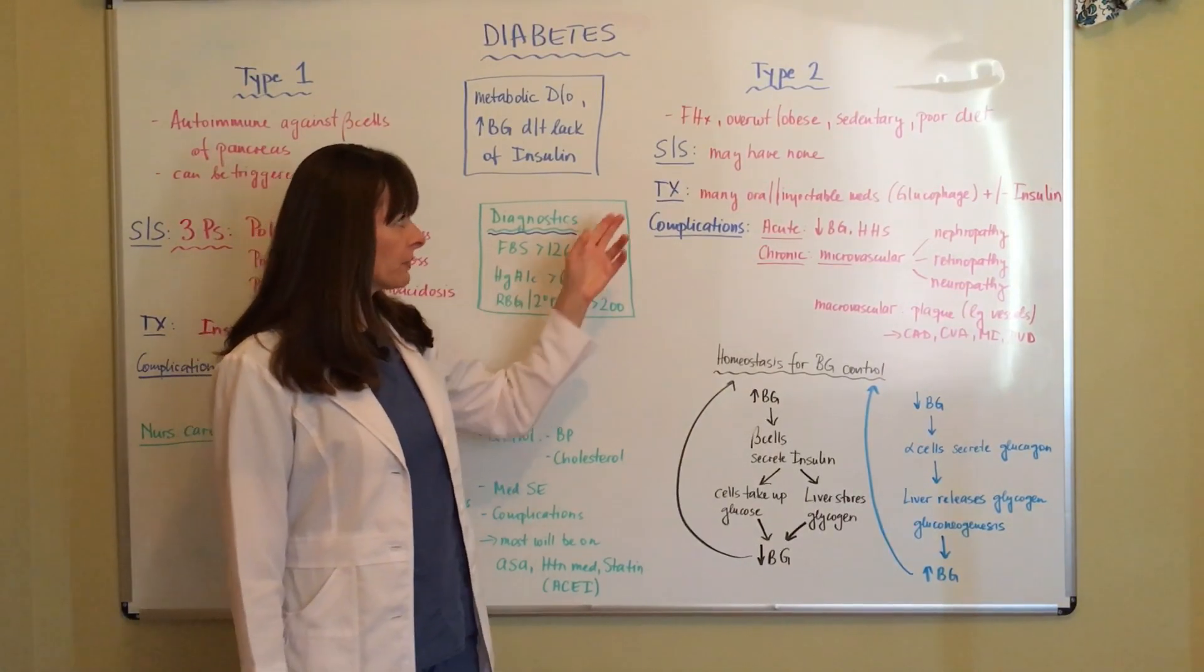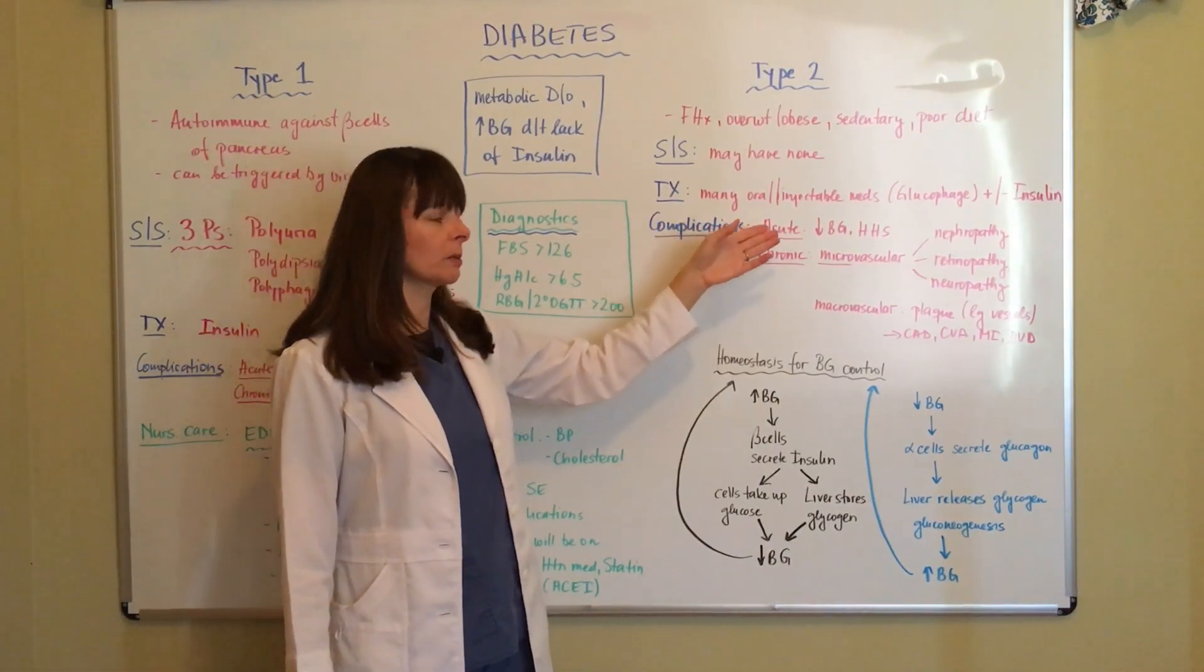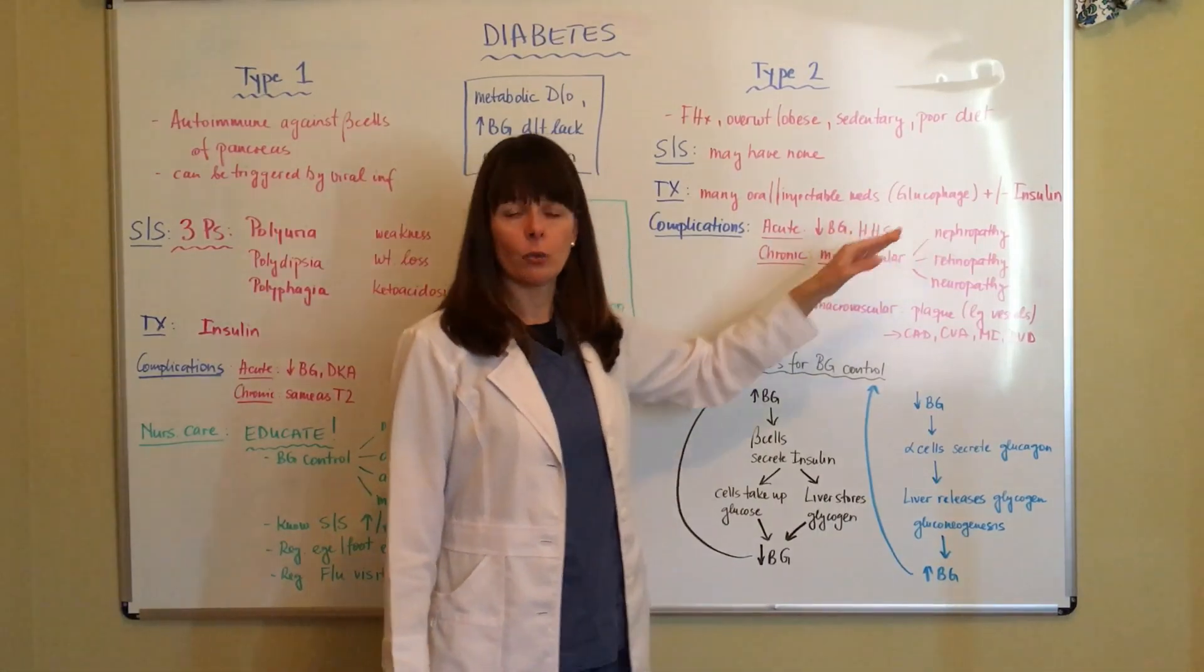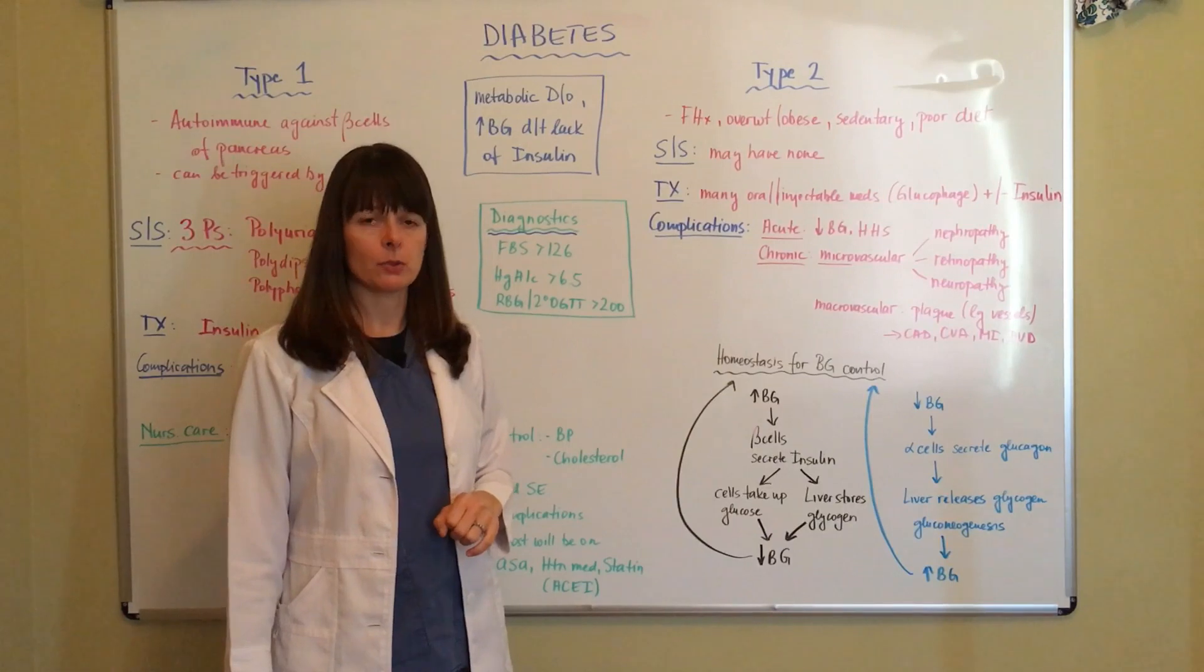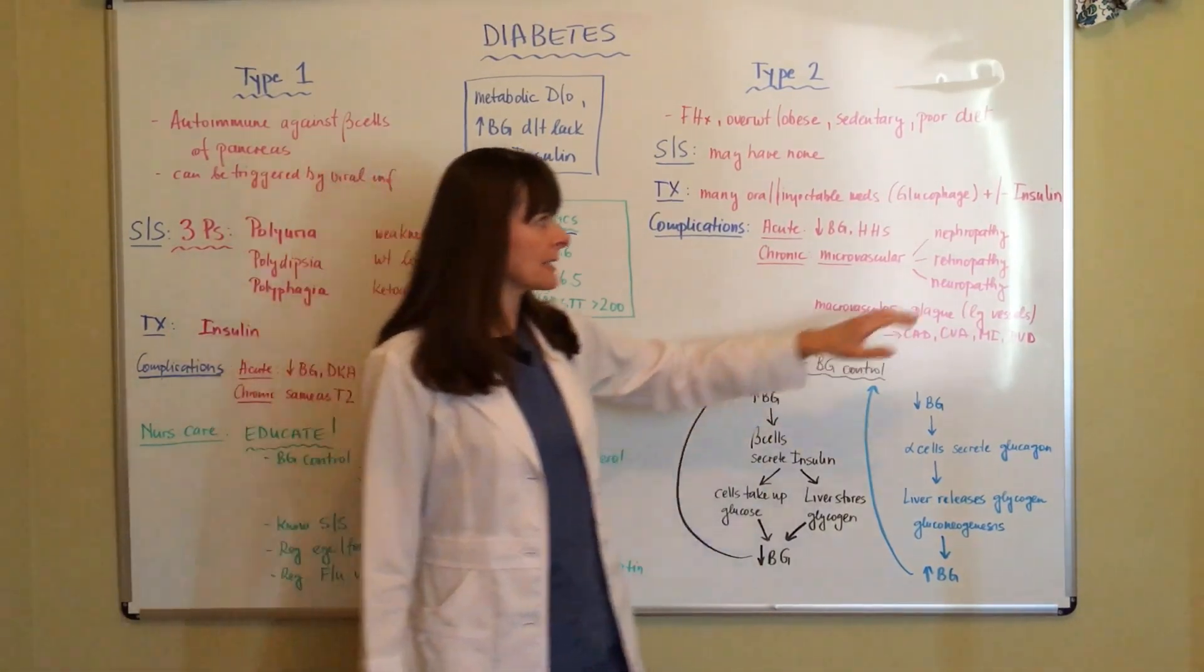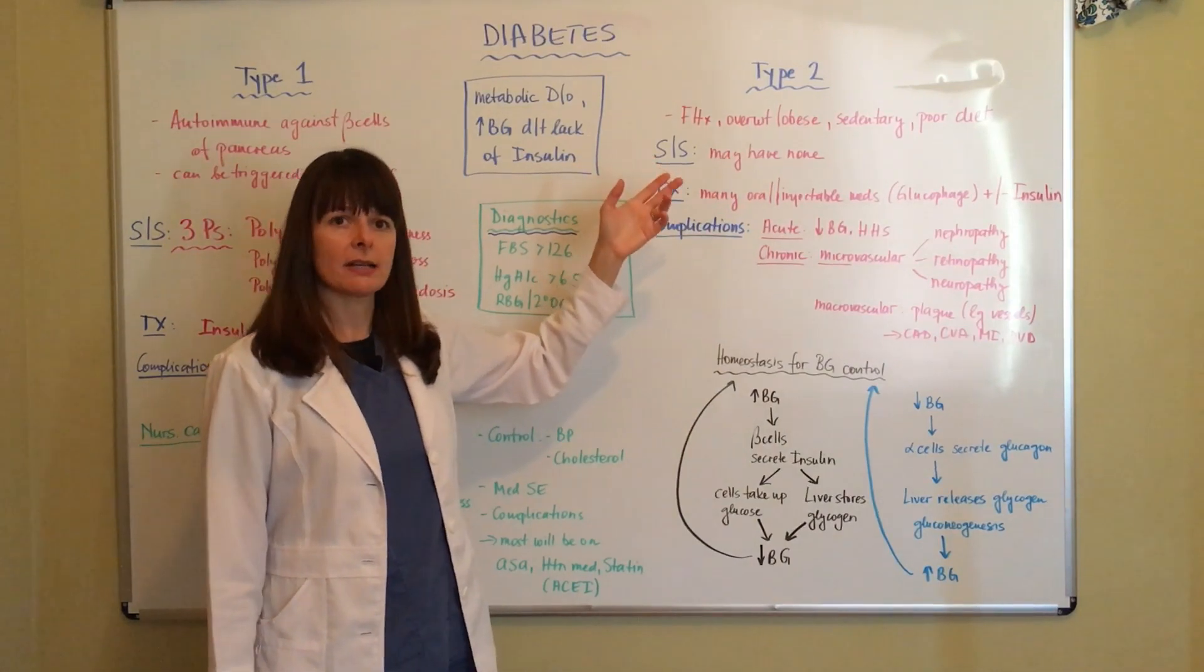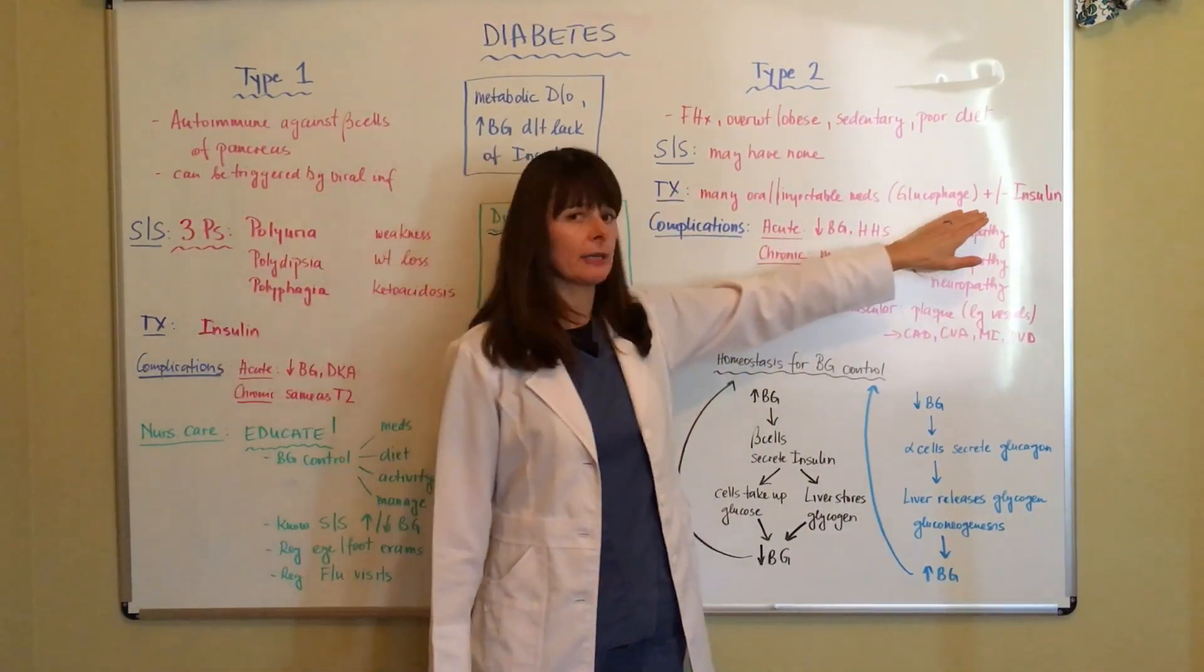For treatment for type 2 diabetes, there are many oral and injectable medications available. I wrote down glucophage or metformin, which is typically used as the first line for newly diagnosed type 2 diabetics, and then plus or minus insulin. Depending on how well the beta cells of the pancreas are functioning still, the patient may or may not need insulin.